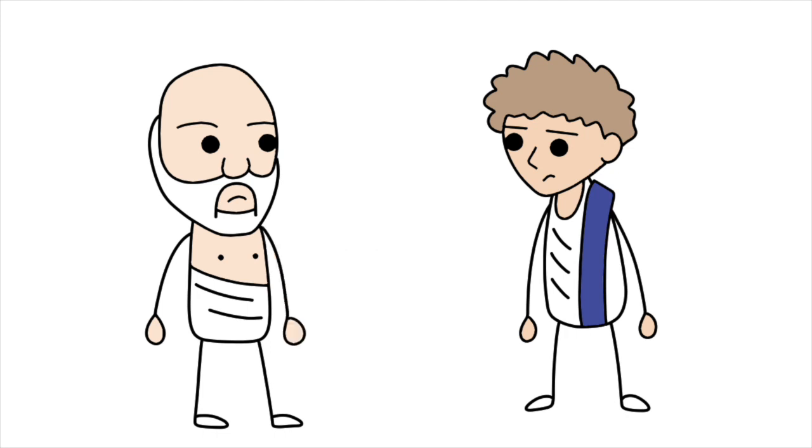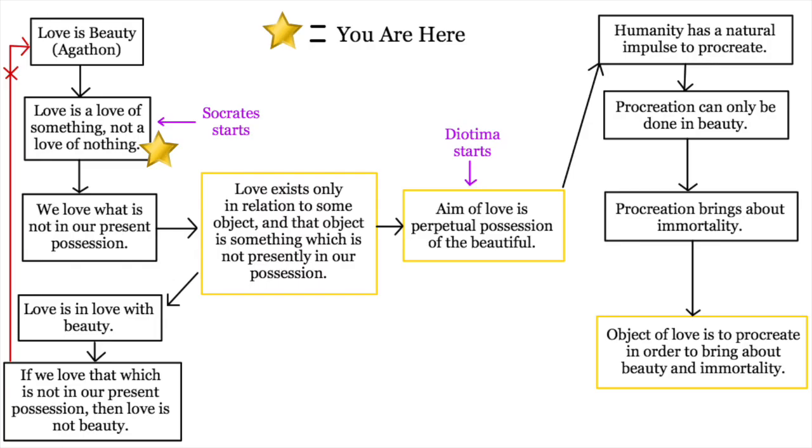So, Socrates asks Agathon. Isn't love a love of something? Or can love exist without something to be loved? Like, think of a father or a brother. You can't be a father in isolation. No, you need to be a father of someone to be a father. So love means love of something rather than love of nothing, right? Agathon agrees.